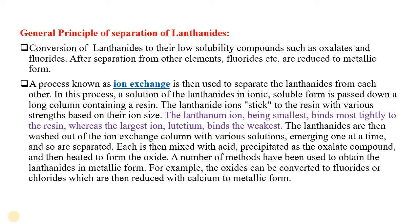Each fraction collected from the column is mixed with acid, precipitated as an oxalate compound, and then heated to form an oxide. The oxides can be converted to fluorides or chlorides, which are then reduced with calcium to metallic form. Alternatively, the oxides can be directly reduced into metallic form by using a reducing agent such as calcium.